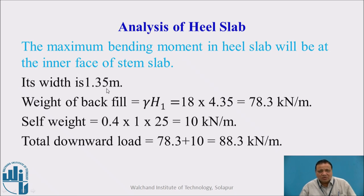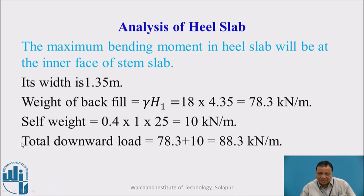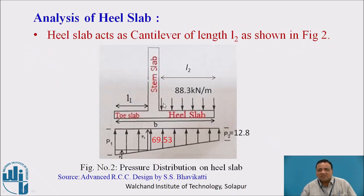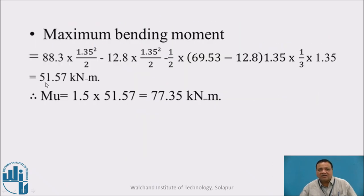The length of the heel slab cantilever L2 is 1.35 meters. Weight of backfill is gamma into H1, which works out to 78.3 kN per meter. Self-weight of heel slab is 0.4 × 1 × 25 = 10 kN per meter. Total downward load is 88.3 kN per meter, as shown in figure 2. The maximum bending moment is calculated by dividing the trapezoidal upward reaction into a rectangular load and a triangular load. For the rectangular portion: 88.3 × 1.35²/2 minus 12.8 × L2²/2.